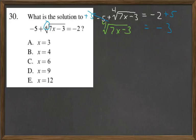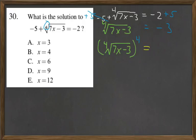Now, to get rid of that 4th root, we are going to take both sides to the 4th power. On the left, the 4th root and the 4th power cancel each other out, so we get rid of the radical.